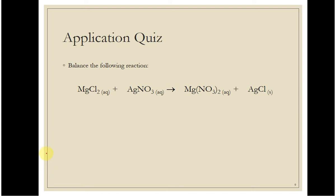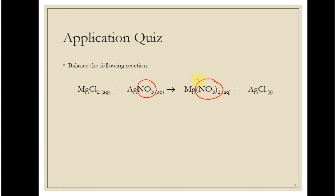So with that in mind, let's go ahead and balance this. Another note: there are two ways to do this. We could do magnesium, chlorine, silver, nitrogen, and oxygen — but you can see how nitrate is the same here and here. Because nitrate is going to stay the same on both sides, I'm going to leave that as one thing. So when I balance, I'm going to balance magnesium, chlorine, silver, and the nitrate ion. If you don't want to do it this way, that's fine — do it however you're most comfortable.